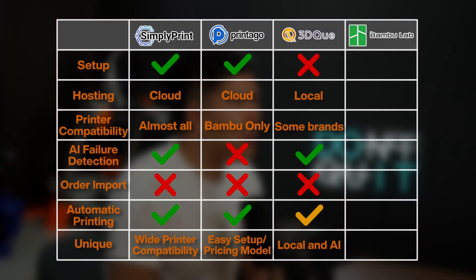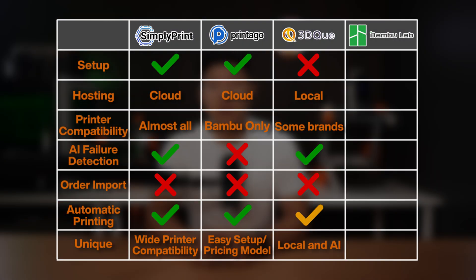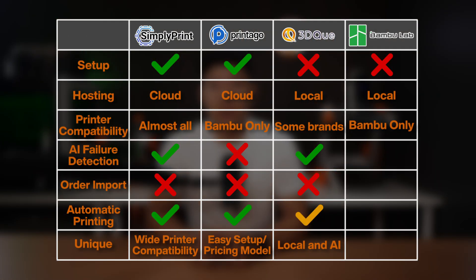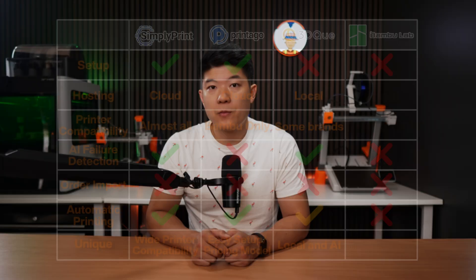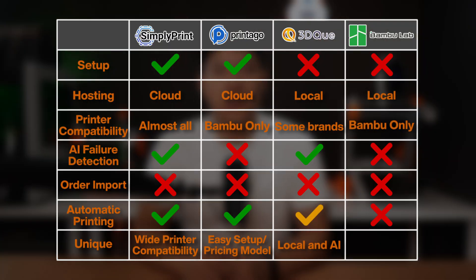Before the cost calculation, let's add the Bamboo Farm Manager to the comparison table. It runs locally and installation is limited to Windows machines. Since it's Bamboo's ecosystem, printers are easily added, but it only supports their own machines. There's no failure detection, no Etsy and Shopify connectivity, and no support for automatic printing systems — though you can use it with FarmLoop via our app. Their unique strength is the price: it's free. But there's a lot of catch-up needed to compete in this market.